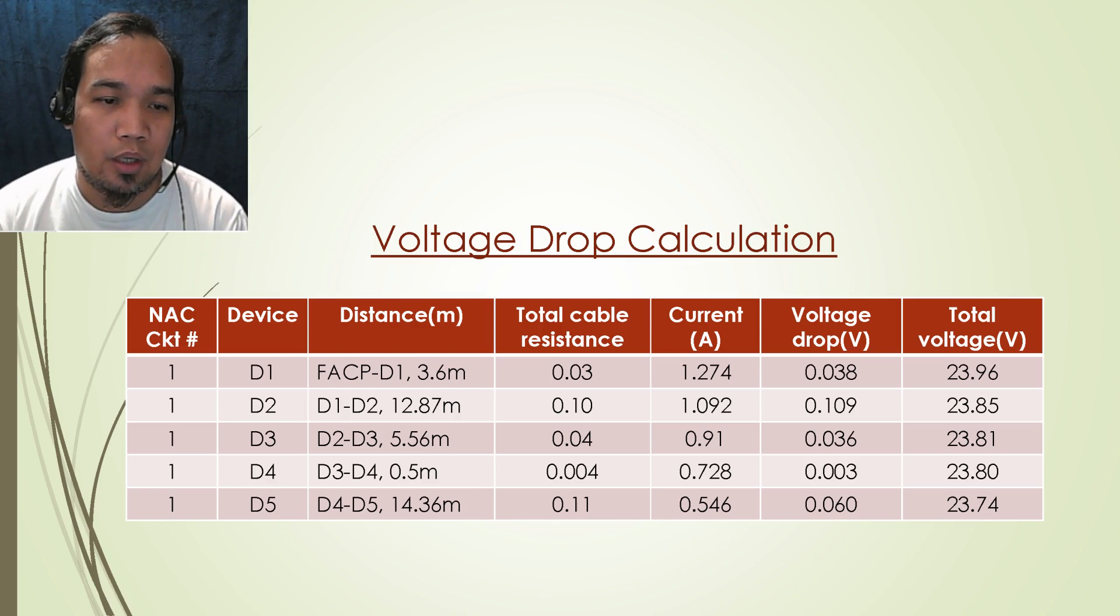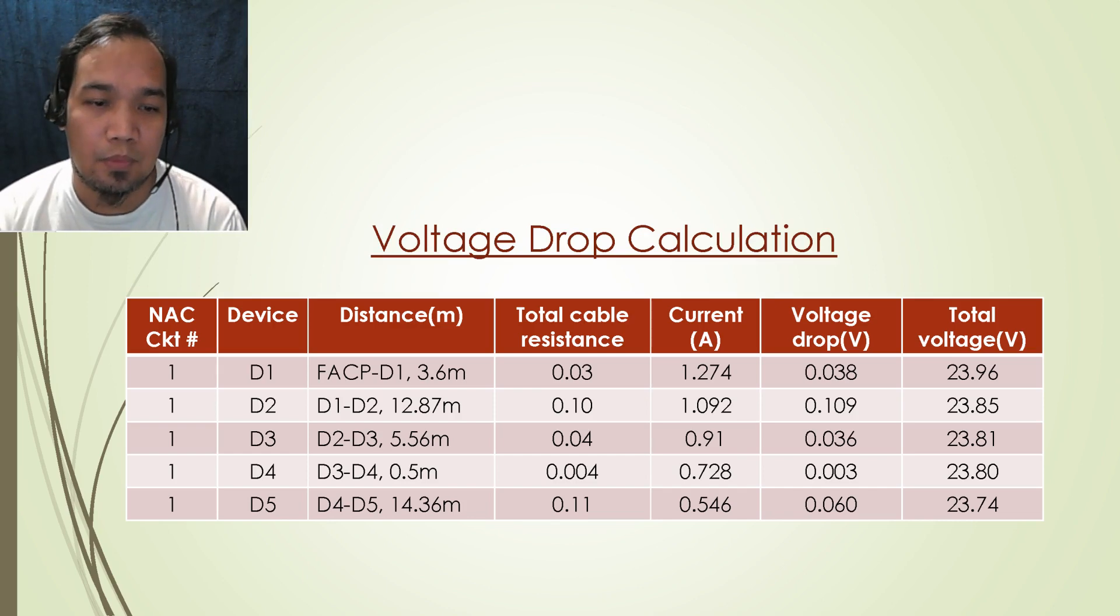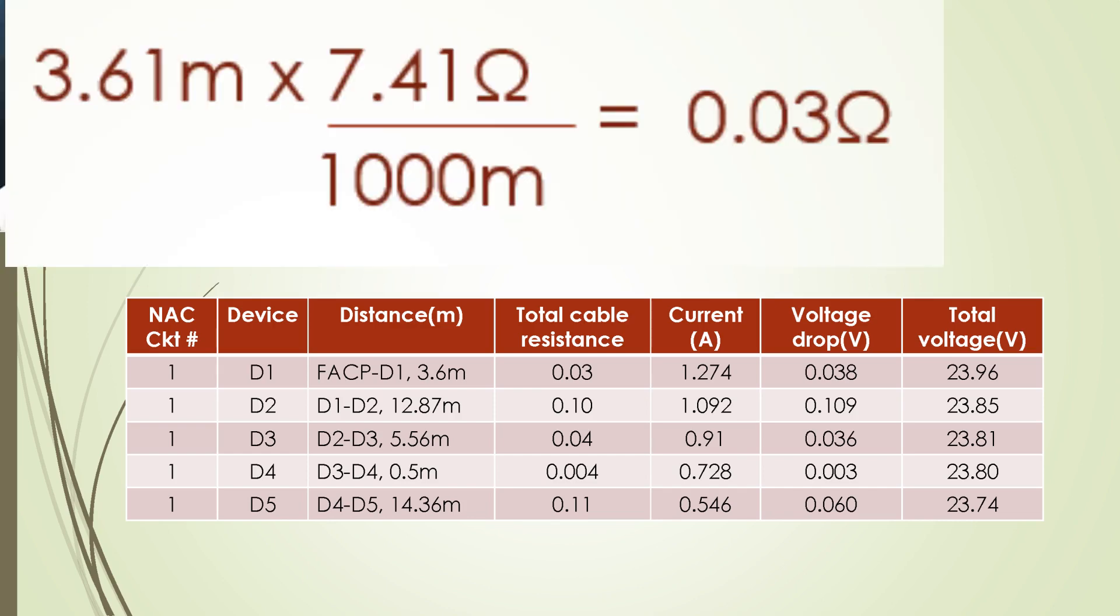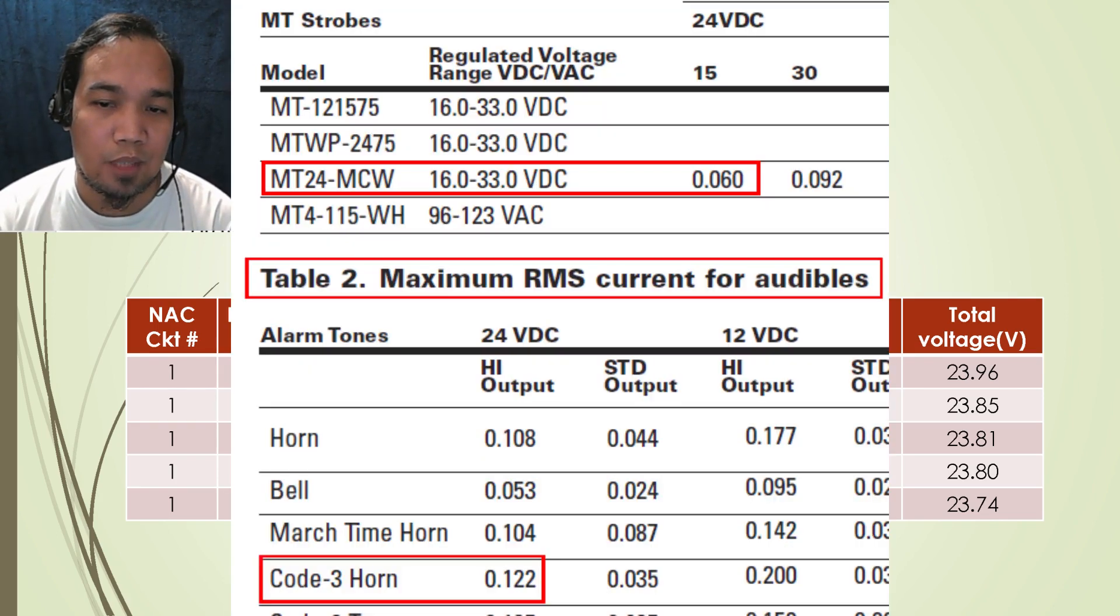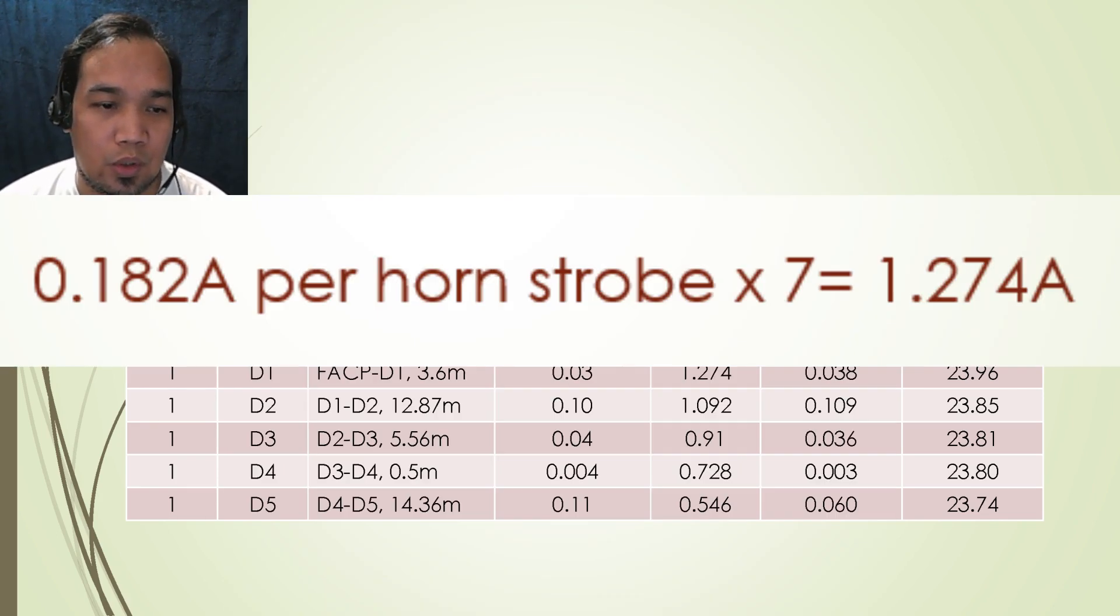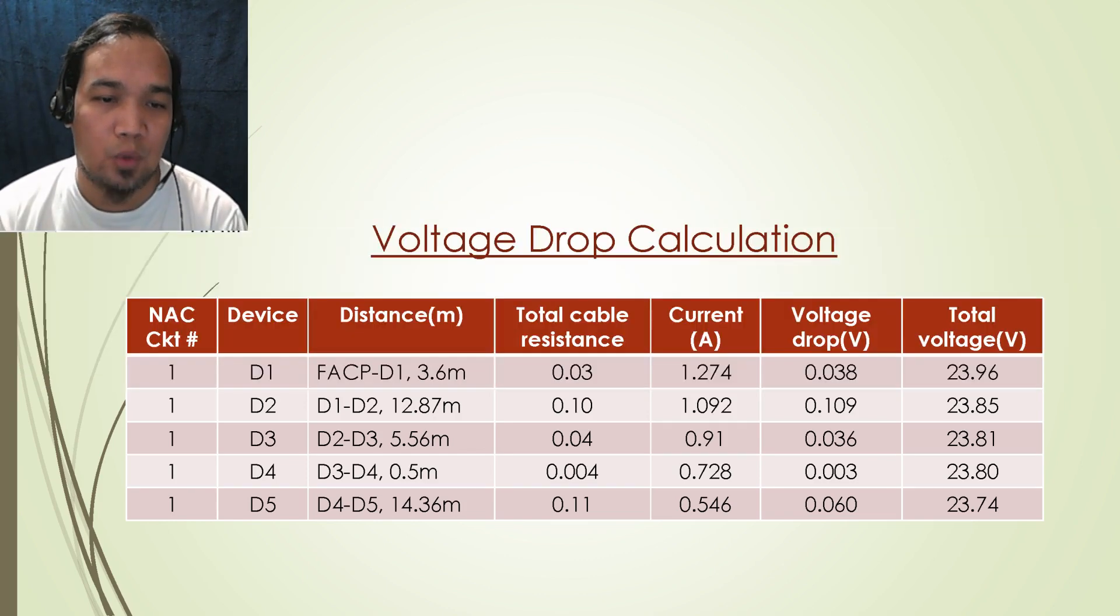The cable distance from the fire alarm control panel as the point of origin to the first device is measured with a value of 3.6 meters. Referring to the data sheet of the cable, the resistance per 1000 meter is 7.41 ohms. As an example, with this information, a value of 0.03 ohms is calculated. Now for the current, the total current of fire alarm horn strobe which is 1.274 ampere shall be used, which results to a voltage drop of 0.038 volts using Ohm's law.